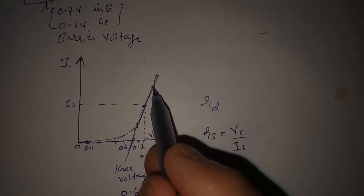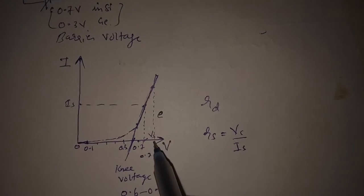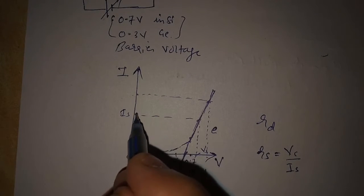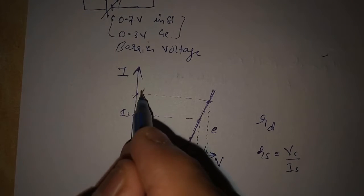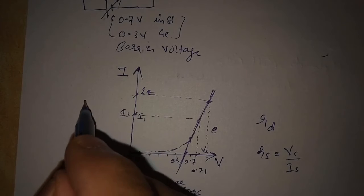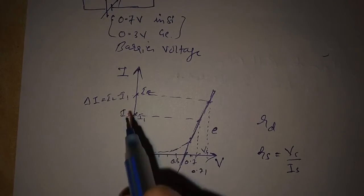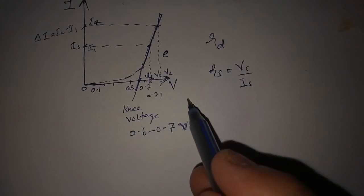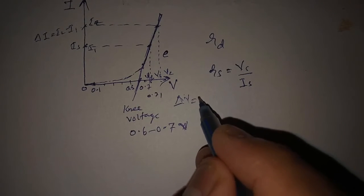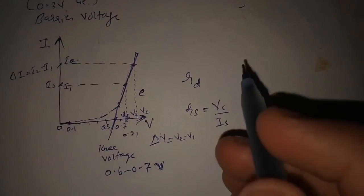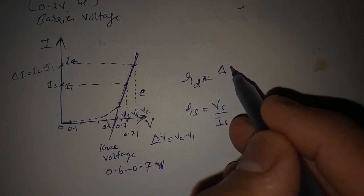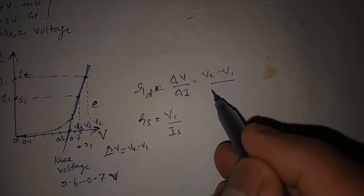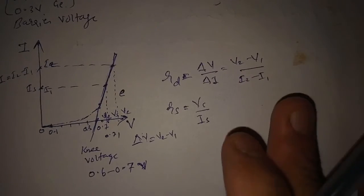For dynamic resistance, we take two points on the characteristic. Drawing perpendiculars gives us two currents I1 and I2, with delta I equal to I2 minus I1, and two voltages V1 and V2, with delta V equal to V2 minus V1. Dynamic resistance is the ratio of delta V divided by delta I, which expands to V2 minus V1 divided by I2 minus I1.